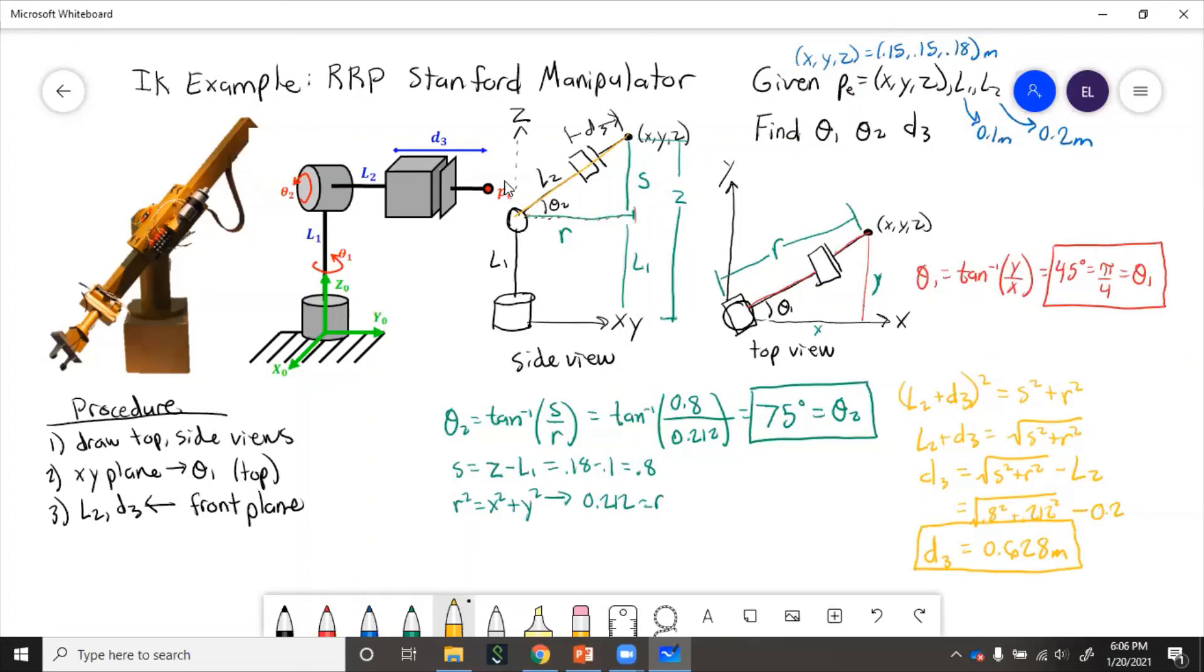So the key to solving these inverse kinematics problems is being able to visualize side view and top view from the three-dimensional image. That way, when you break it into side and top view, it's a lot easier to see how the variables affect the motion and then which dimensions you can use to solve for which of the joint angles and distances.